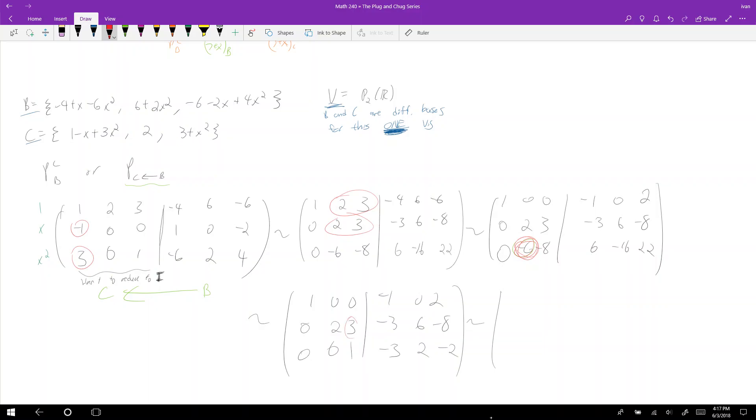All righty. And then now we just need to reduce this guy. Well, we zero out that guy, right? And so what do I get? 1, 0, 0, 0, 0, 0, 0, 0, 1, negative 1, 0, 0, 0, 0, negative 6... Oh, I'm getting ahead of myself. Negative 3, 2, negative 2.